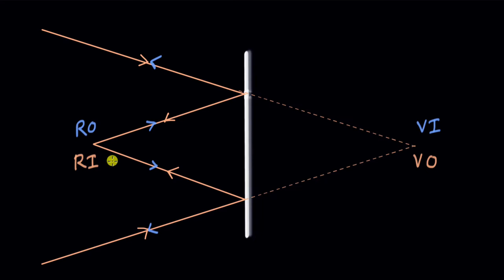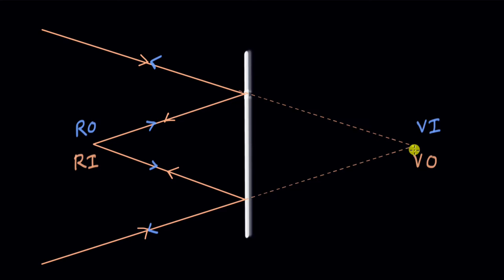This point from where the light rays are diverging becomes a real object, and the rays are not converging at any point, so there is no real image. But if we extend these reflected rays, they appear to be coming out from a certain point, which we call the virtual image. So now in place of the virtual object we have the virtual image, and in place of a real image we have a real object.